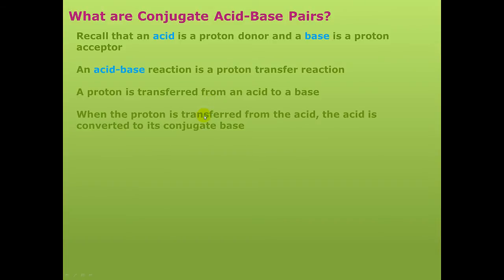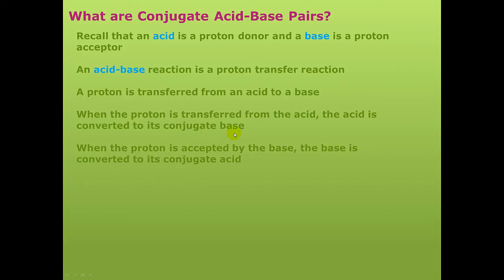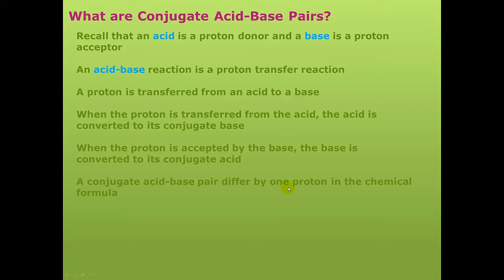When the proton is transferred from the acid, the acid is converted to its conjugate base. When the proton is accepted by the base, the base is converted to its conjugate acid. A conjugate acid-base pair will differ by one proton in its chemical formula.